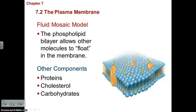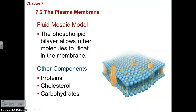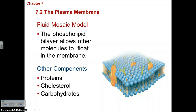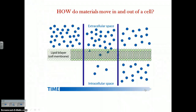The fluid mosaic model states that materials such as proteins, cholesterol, and carbohydrates are able to float within the membrane and have different jobs. Cholesterol prevents the fatty acid tails from sticking together, proteins allow materials to travel through, and carbohydrates transmit signals letting the cell know what it has come in contact with.